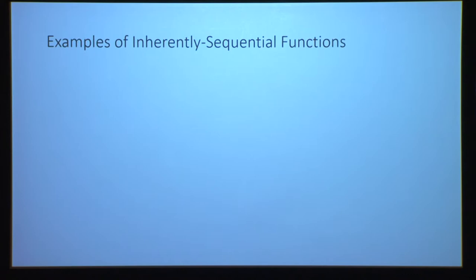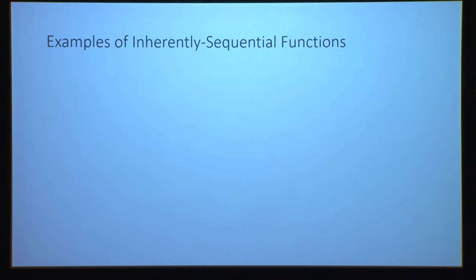Let me give some examples of functions believed to be inherently sequential. First, iterated hashing: take some cryptographic hash function mapping n-bit strings to n-bit strings and apply it t times. Thinking of every hashing as taking one unit of time, unless your hash function is really bad, there shouldn't be any other way to compute the output other than just t sequential hashings.